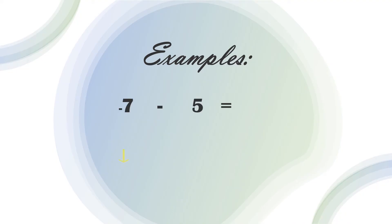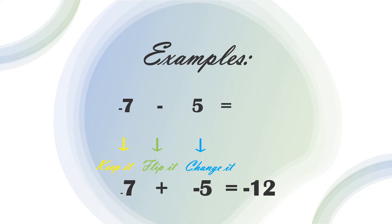Another example: negative 7 minus 5 equals — keep the number negative 7, flip the subtraction sign to addition sign, change the positive 5 to negative 5. Negative 7 plus negative 5 equals negative 12.